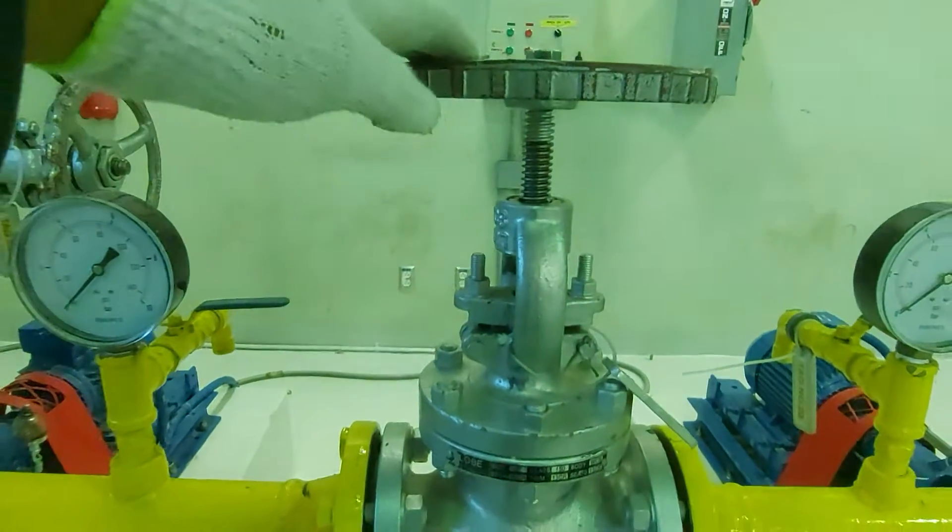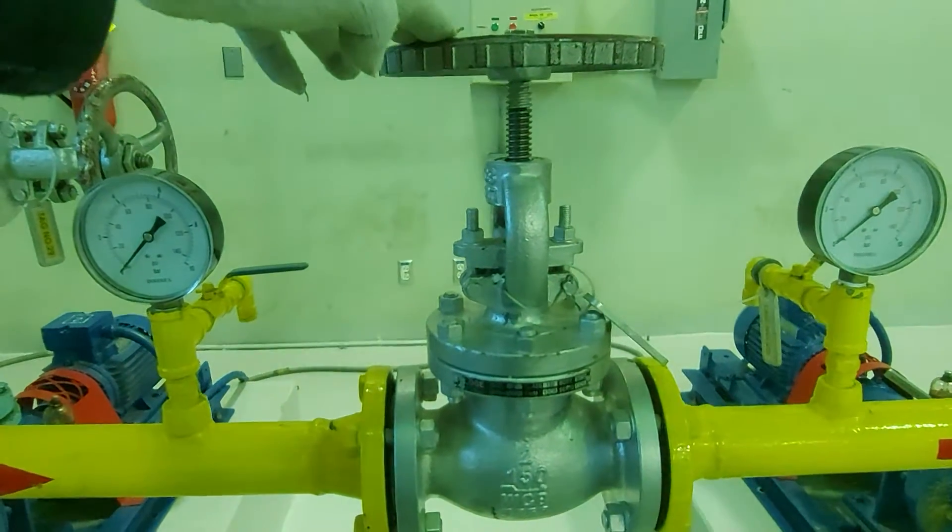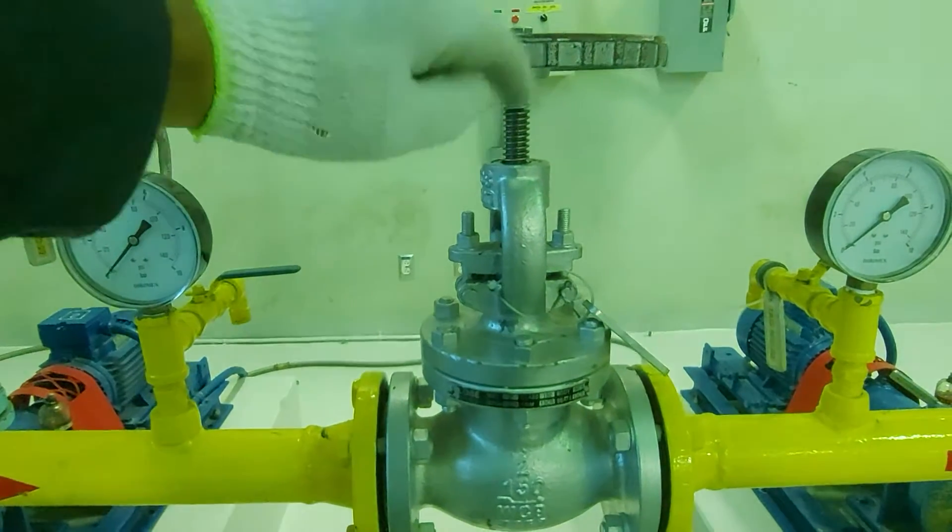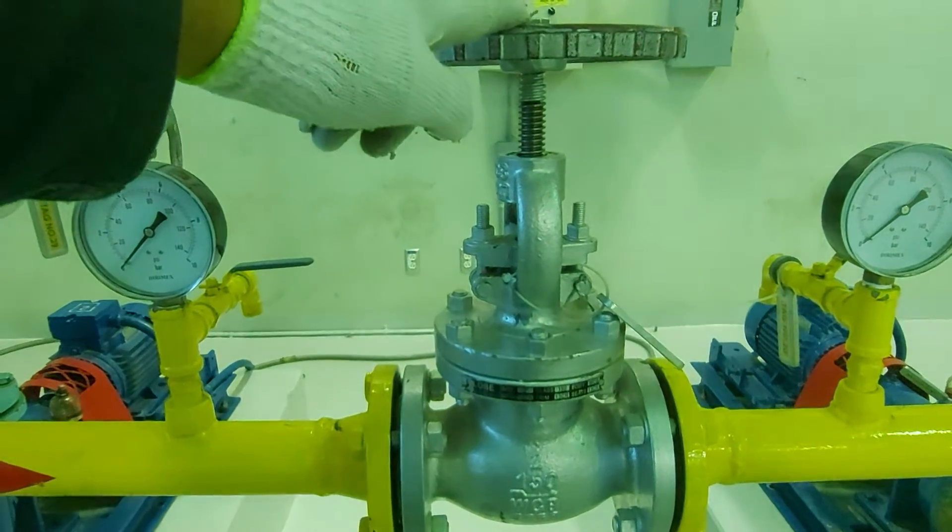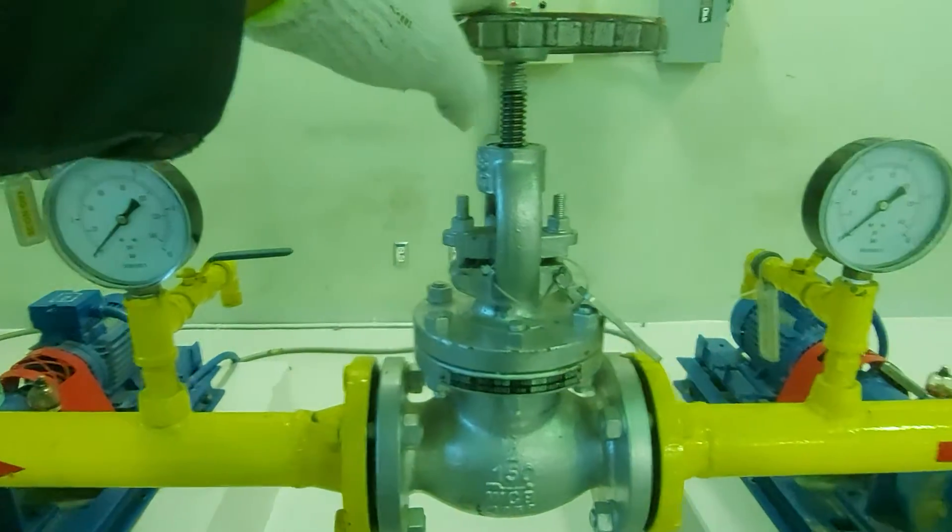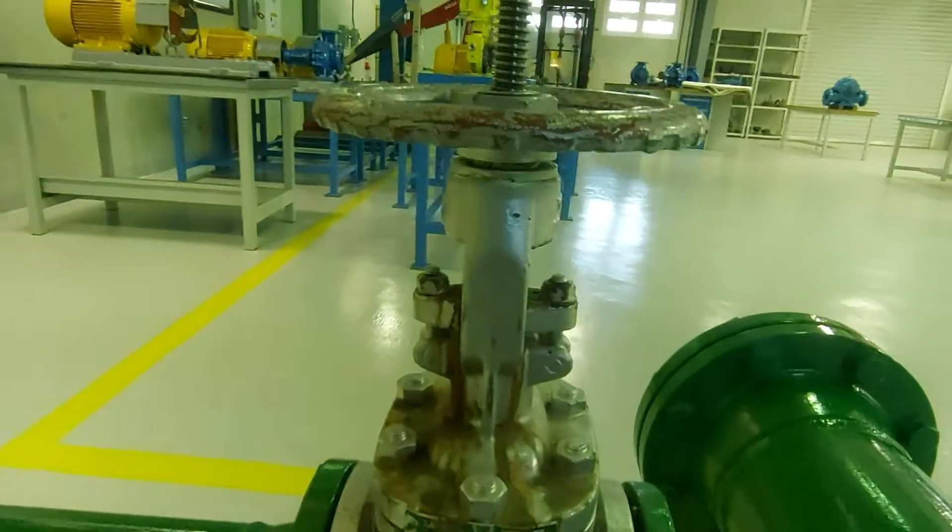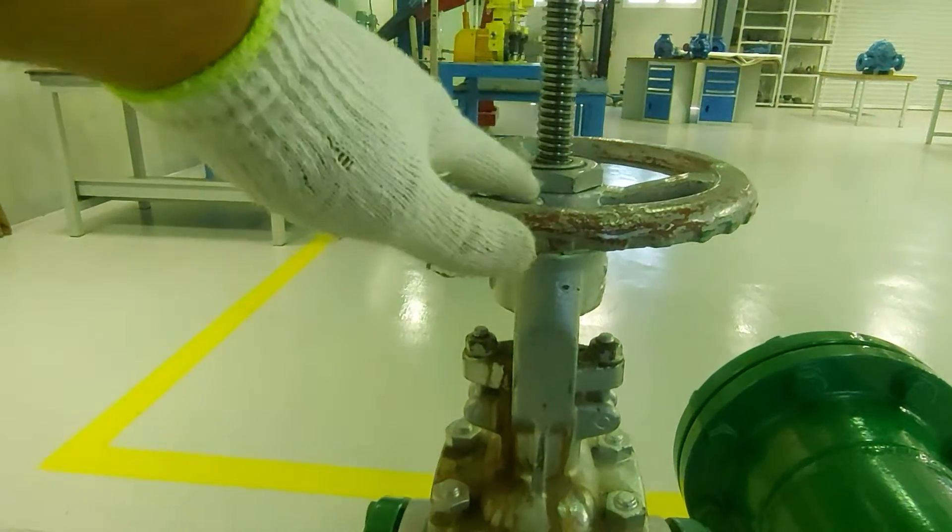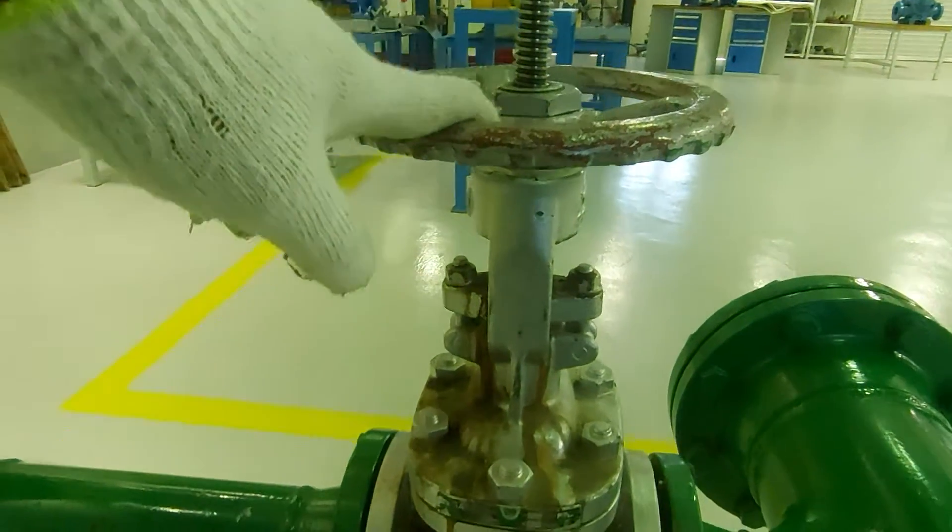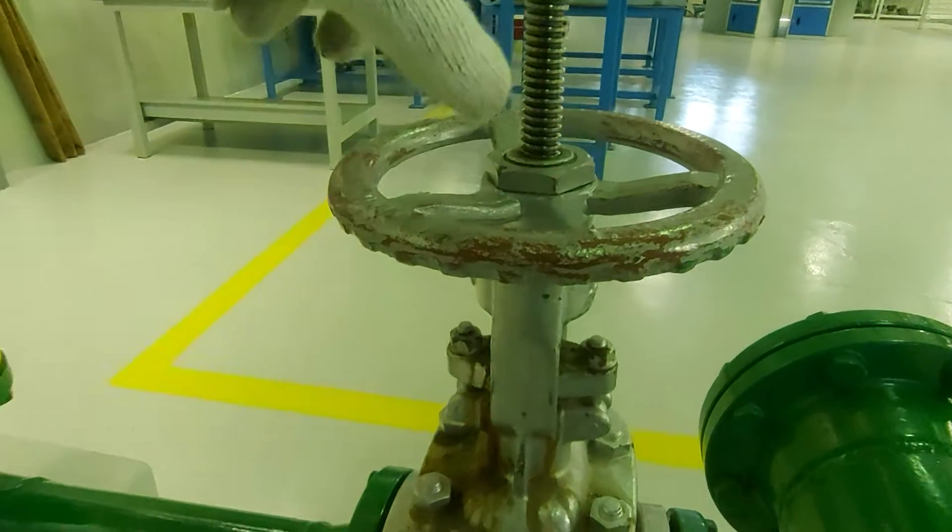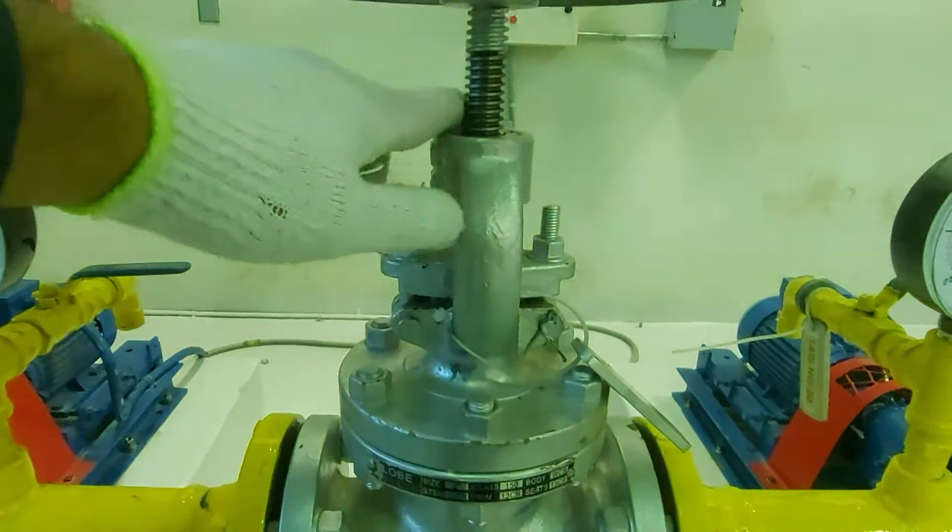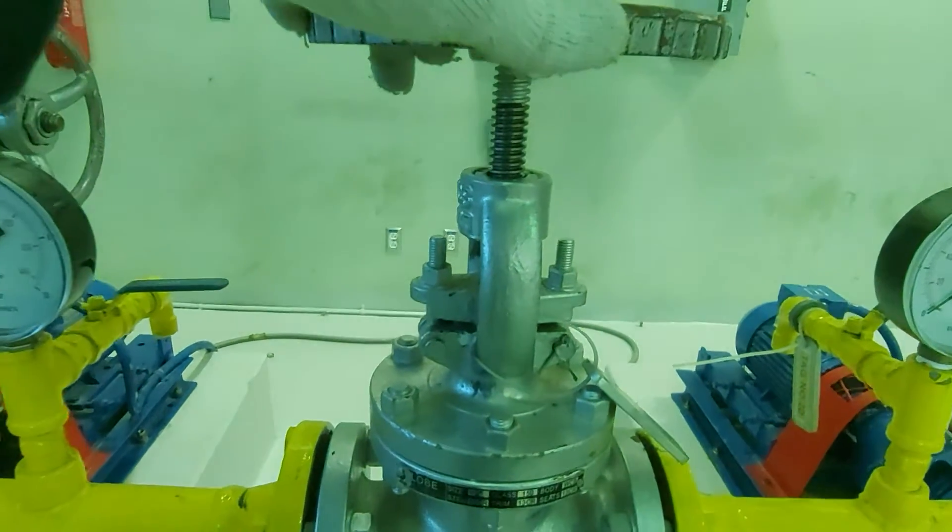So from far away you can tell that this valve is open when you see the stem below the handwheel, whereas a gate valve, you see the stem above the handwheel. So the gate valve is open, you see the stem above the handwheel. Here you see the stem below the handwheel, so you know that this valve is open.